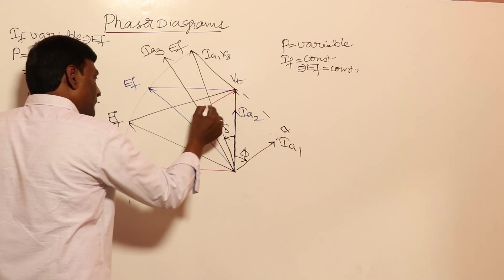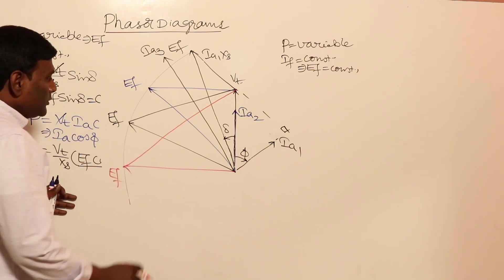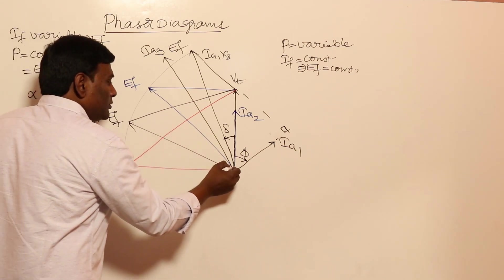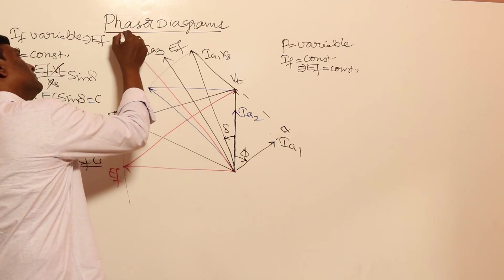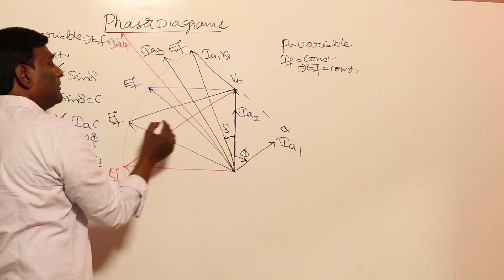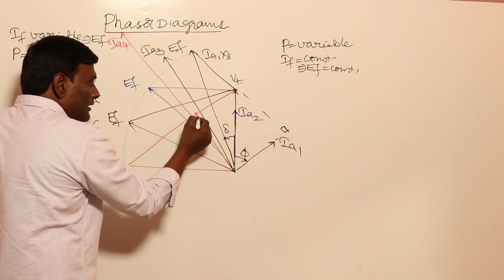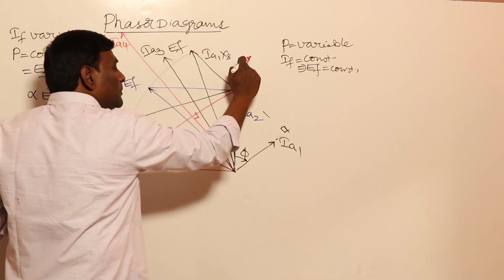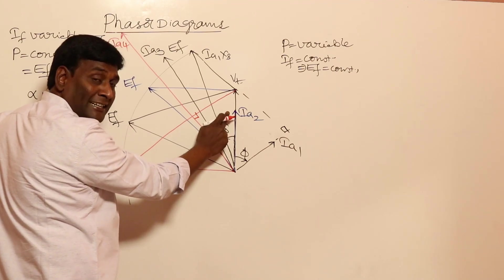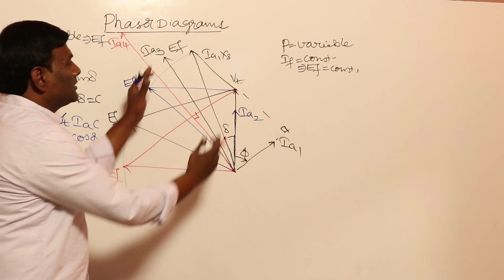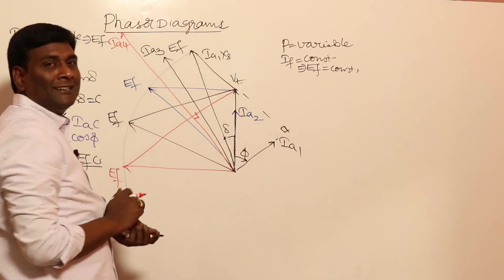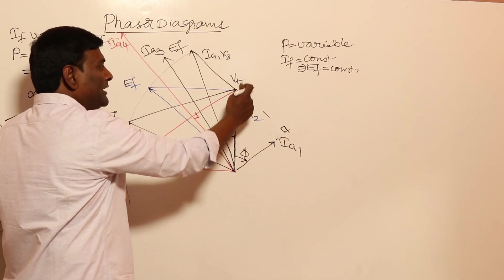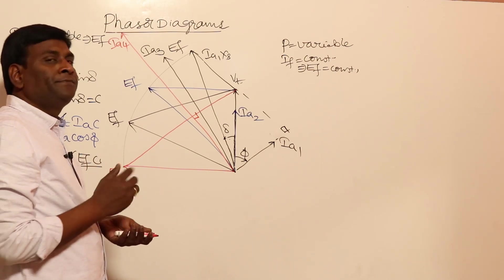At delta = 90, EF is positioned such that Ia4 axis is 90 degrees to the EF line, and Ia4 cos φ4 > Ia3 cos φ3 > Ia2 cos φ2 > Ia1 cos φ1, since active power increases from the first to the fourth case. The angle between Vf and Vt is 90 degrees at maximum output power.